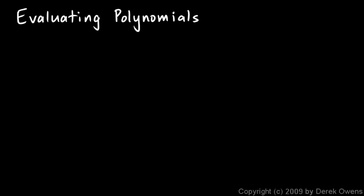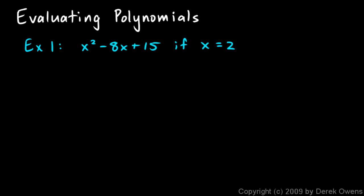Now we'll talk about evaluating polynomials. The term 'evaluate' means to find a value — we want to get a number. We can evaluate a polynomial if we're given a value of the variable. We'll look at some examples. Example one: we're going to evaluate the polynomial x squared minus 8x plus 15 if x equals 2, so the variable x shows up in two places.